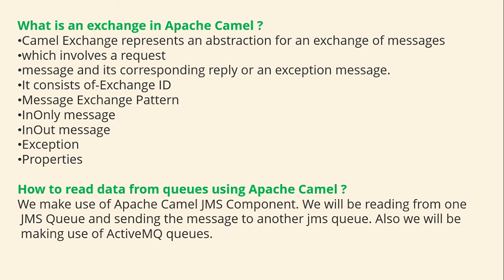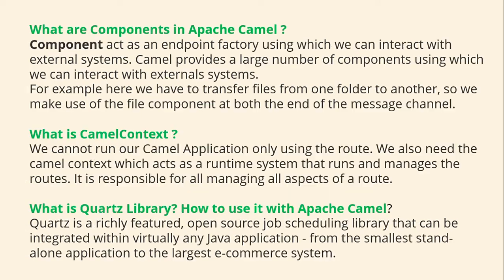How to read data from queues using Apache Camel? We make use of Apache Camel JMS components. We will be reading from one JMS queue and sending the message to another JMS queue. Also, we will be making use of ActiveMQ queues.